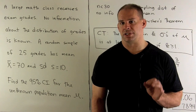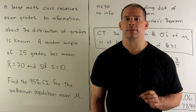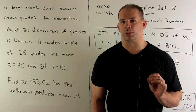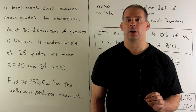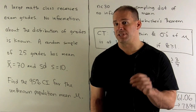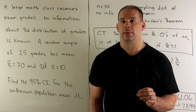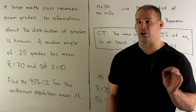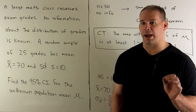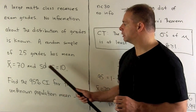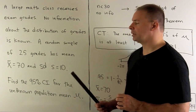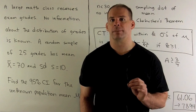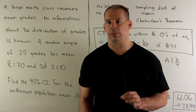A large math class receives exam grades. We have no information about the distribution of grades. We draw a random sample of 25 grades. The mean of the sample is 70 and the standard deviation of the sample is 10. We want to find the 95% confidence interval of the unknown population mean.